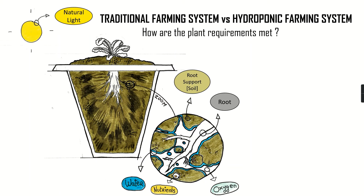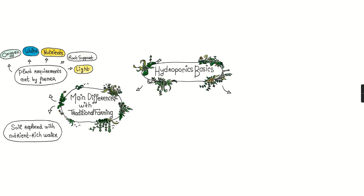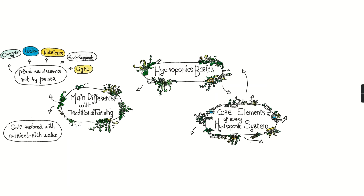Now, how does this differ from a hydroponic system? To understand this, let's review why a plant needs water, oxygen, light, nutrients, and root support, and how these are provided in all hydroponic systems. The first element is water. Plants use it for transportation of nutrients, photosynthesis, and to stand upright.